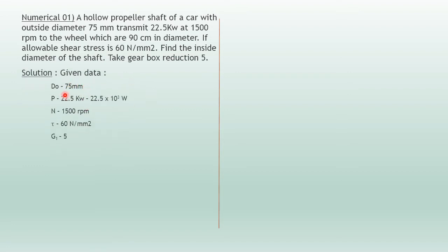The given data: outside diameter is 75 mm; power is 22.5 kW, which we convert to watts by multiplying by 10³; number of RPM is 1500; shear stress is 60 N/mm², already in the correct unit so no conversion needed; and gearbox reduction G1 is 5.